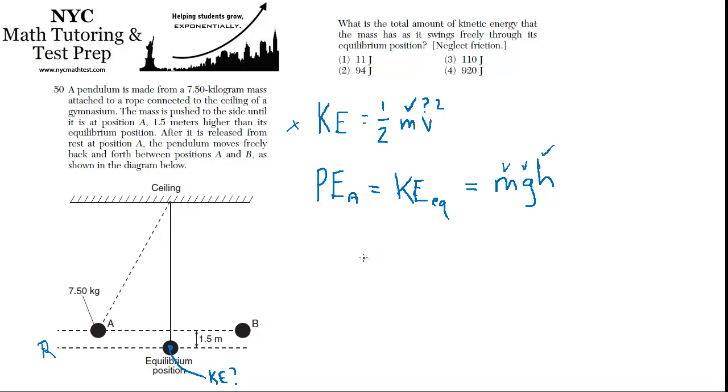We have mass of 7.5 kilograms times G, 9.81 meters per second squared, and height is 1.5 meters.